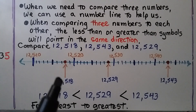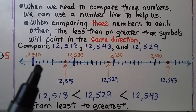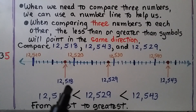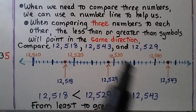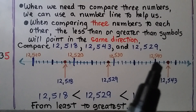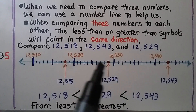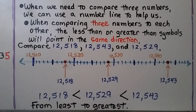We take 12,518 and count from 12,510 — 11, 12, 13, 14, 15, 16, 17, 18 — so that's 12,518. Then 12,543 would be three more than the 40 mark, so it's over here. And 12,529 is one less than 30, so it's right here, one mark in front of the 30.